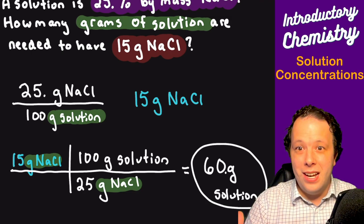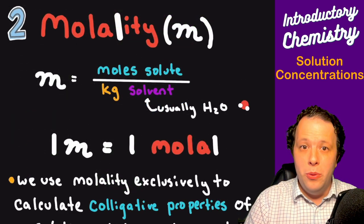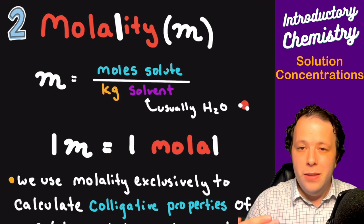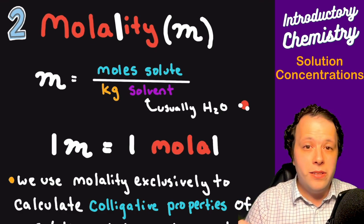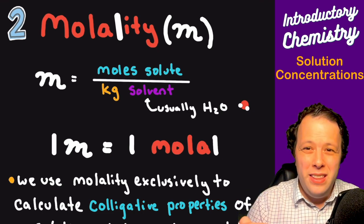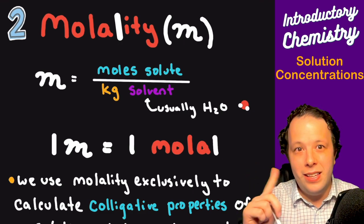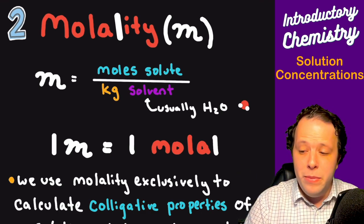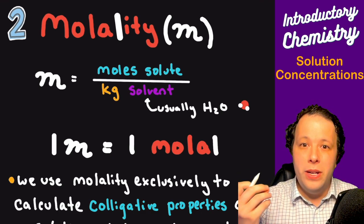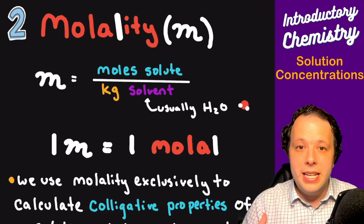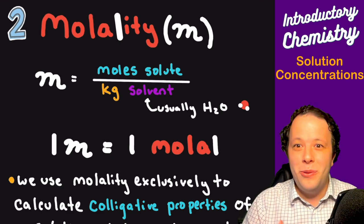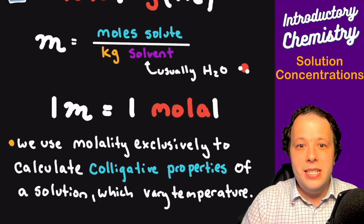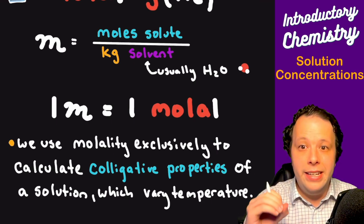Let's look at our next type of concentration: molality, which is moles of solute over kilograms of solvent. This is typically used with water to describe colligative properties. Molality — with an extra L — is represented by an italic M, and one unit is referred to as one molal. This is exclusively used to describe colligative properties because solutions vary with temperature. If temperature changes, the volume of your solution changes with it as molecules get excited and exhibit pressure.